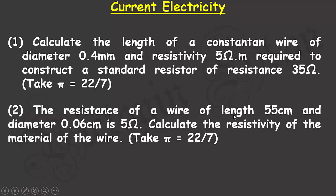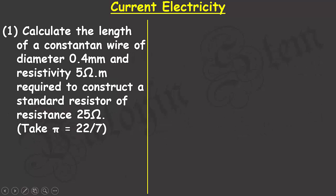In the second question: the resistance of a wire of length 55 centimeters and diameter 0.06 centimeters is 5 ohms — calculate the resistivity of the material of the wire. Pi is also given as 22 divided by 7. To solve the first question I'll write out the resistivity equation.